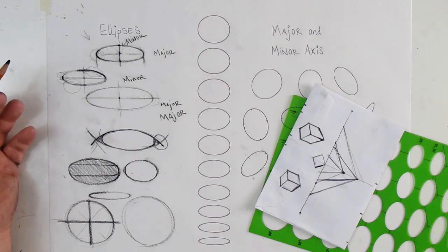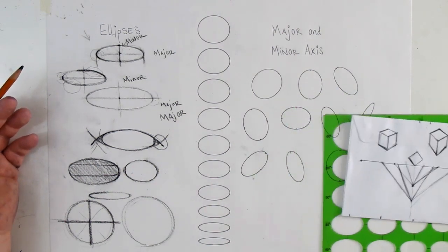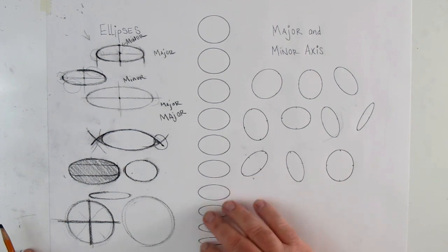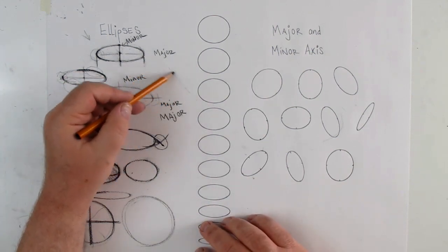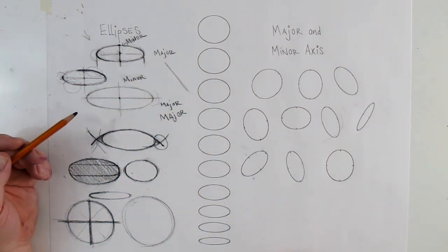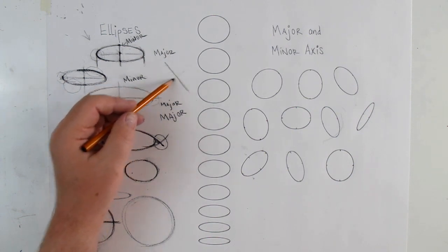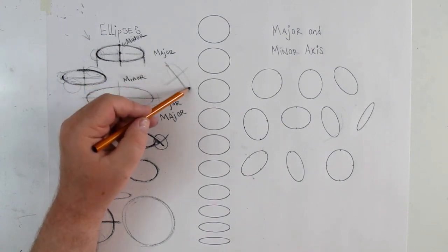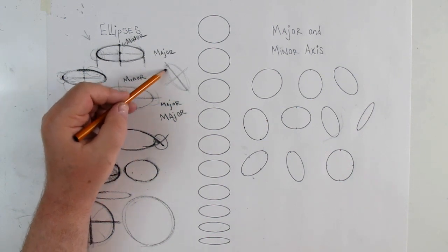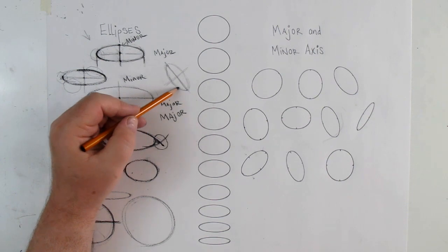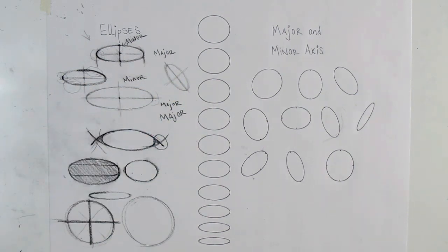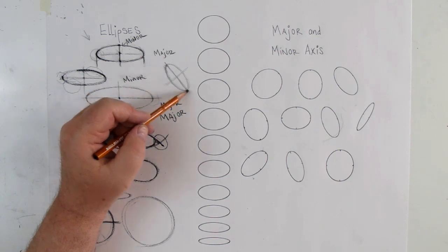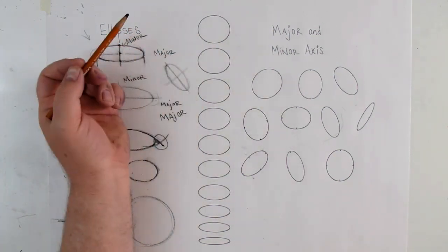These are all aligned, but the major and minor axis also shows us the alignment or lean of an ellipse. If I have an object with an ellipse at an angle, I need a major axis at an angle, with the minor axis 90 degrees to it. This gives us an ellipse that's leaning to the left.